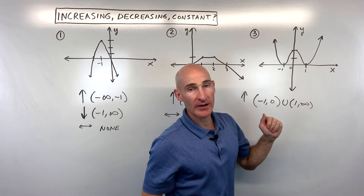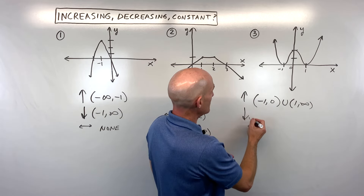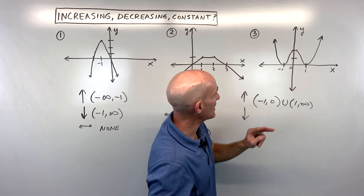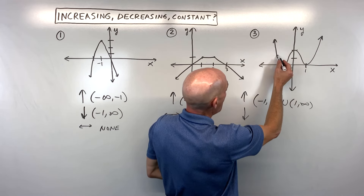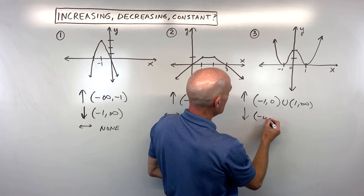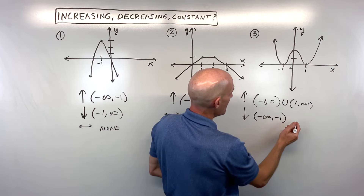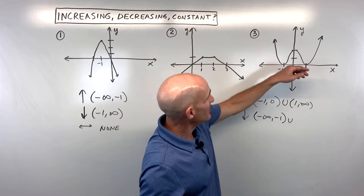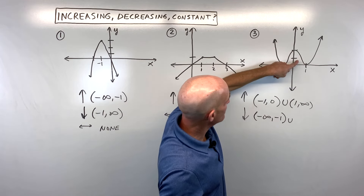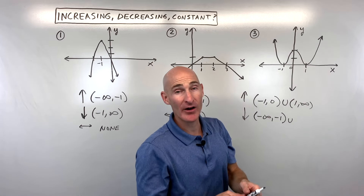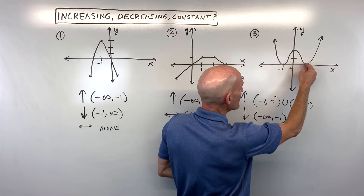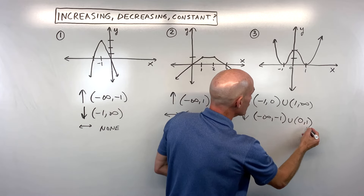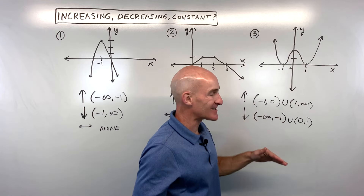Now where is the graph decreasing — going down to the right, like a negative slope? We can see two regions, so again two intervals. For what x values are the y values decreasing? That's from negative infinity to negative one, union zero to one — not including the endpoints. Here's where students make a mistake: they sometimes look at the y values and say it's decreasing from two down to zero. Those are y values. I always ask myself: for what x values are the y values decreasing? The y values are going down between x equals zero and x equals one.